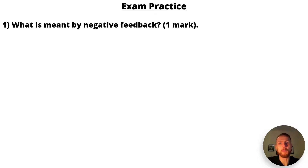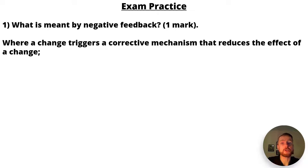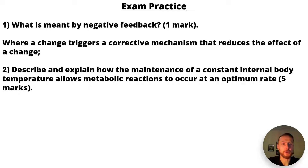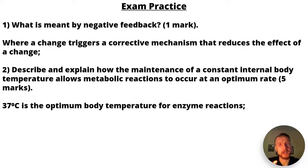Some exam practice, because for AQA you need this practice for your A-level biology. Number one: what is meant by negative feedback? The mark scheme says: where a change triggers a corrective mechanism that reduces the effect of a change. Number two: describe and explain how the maintenance of a constant internal body temperature allows metabolic reactions to occur at an optimum rate. This is a five-mark question, so pause the video and have a go.